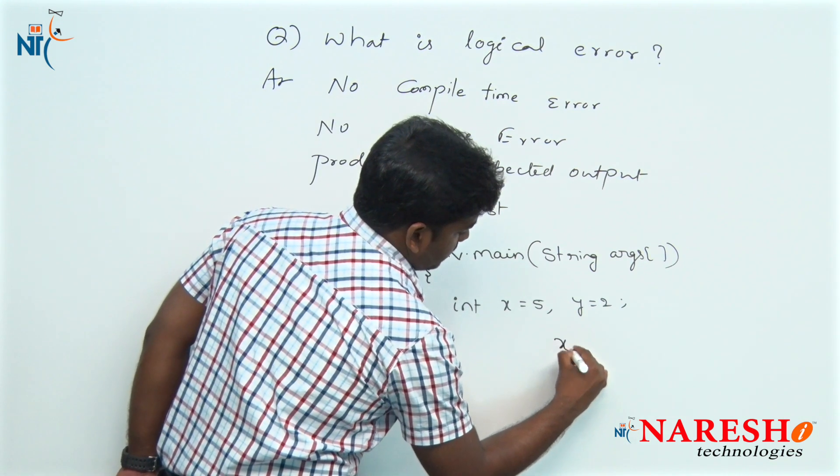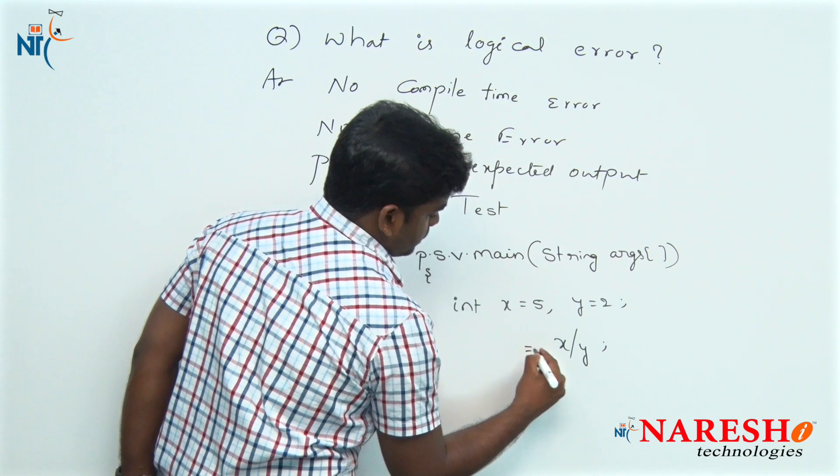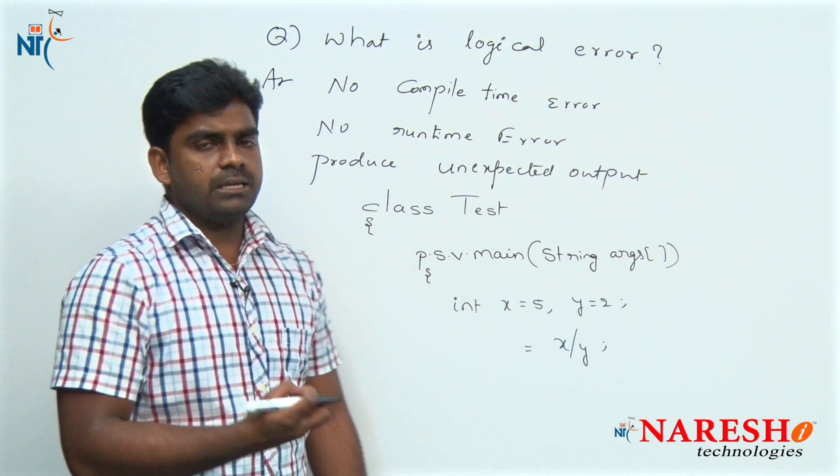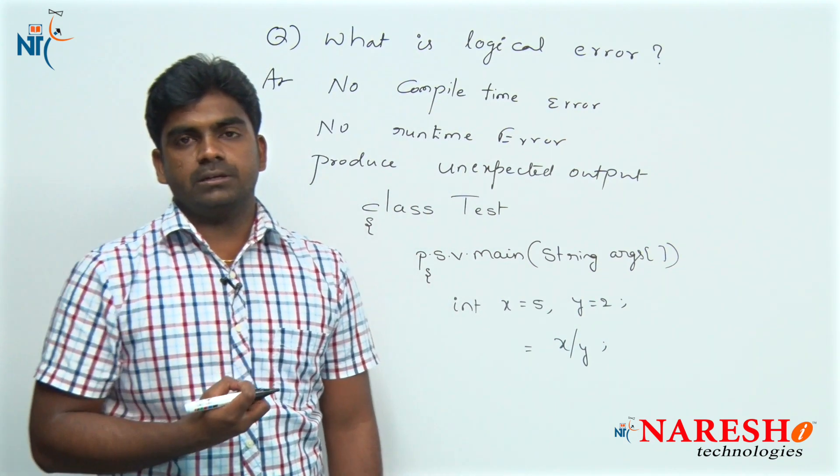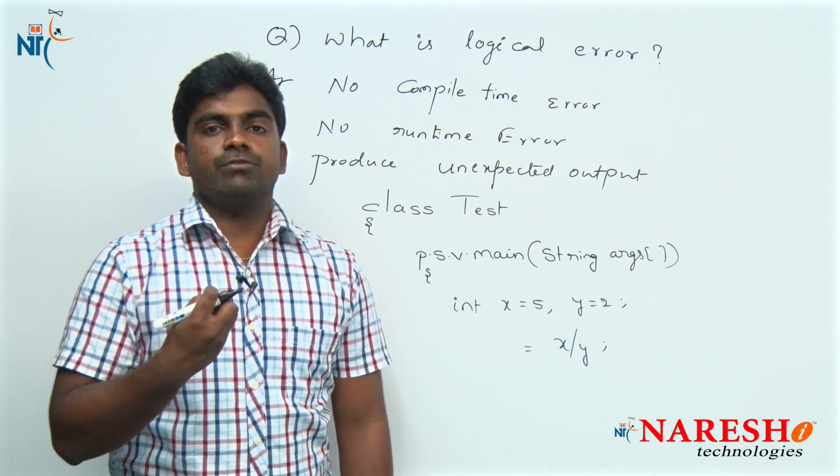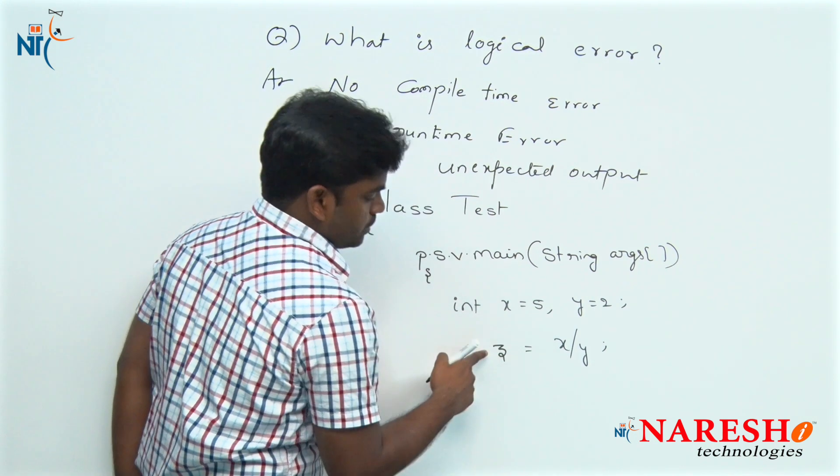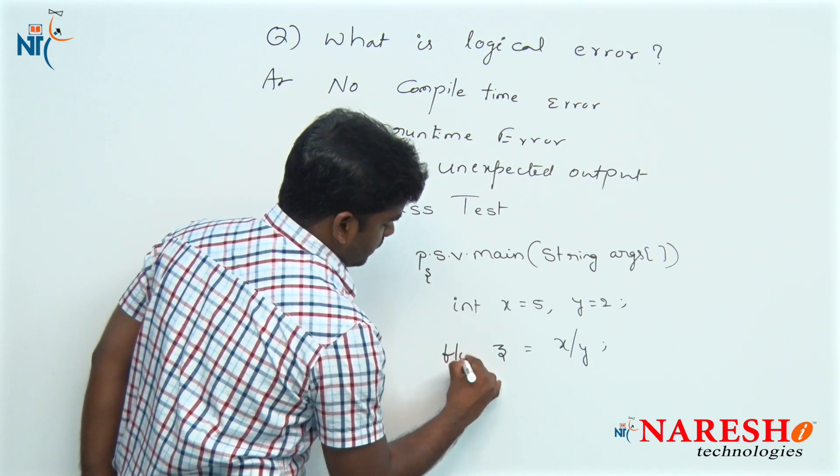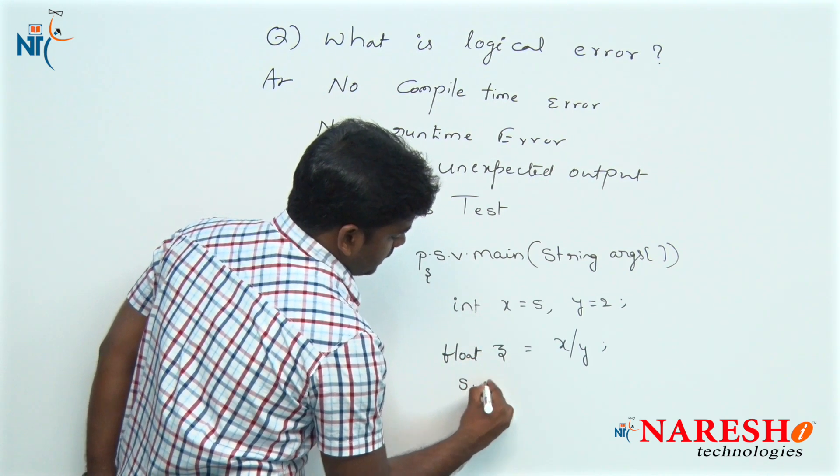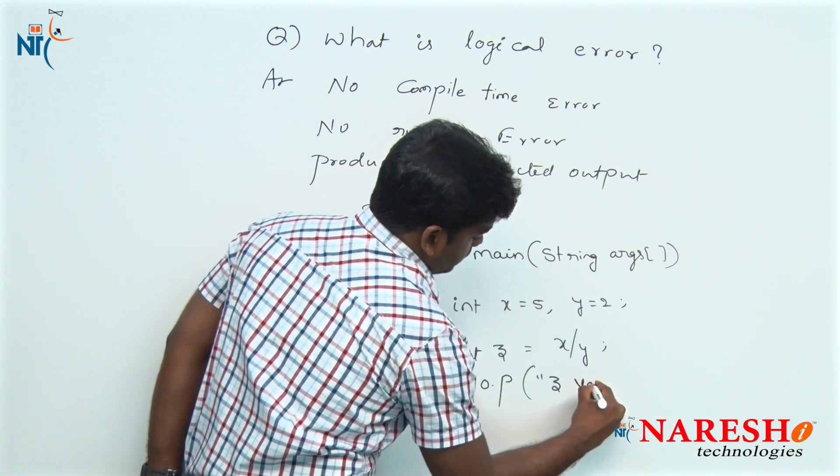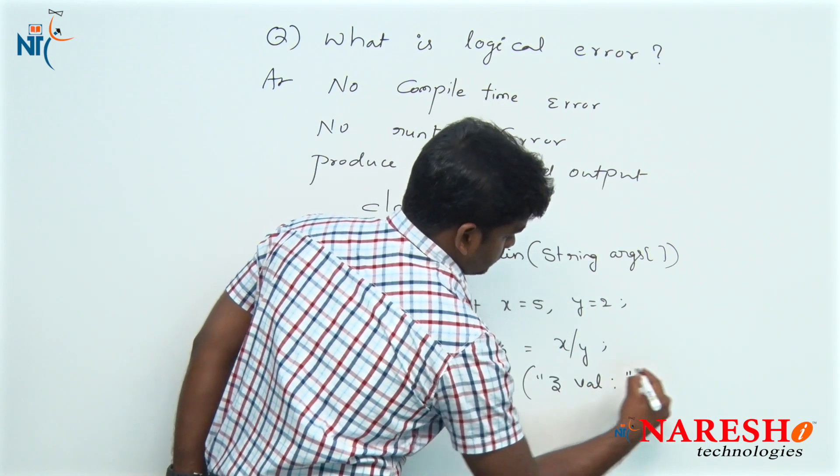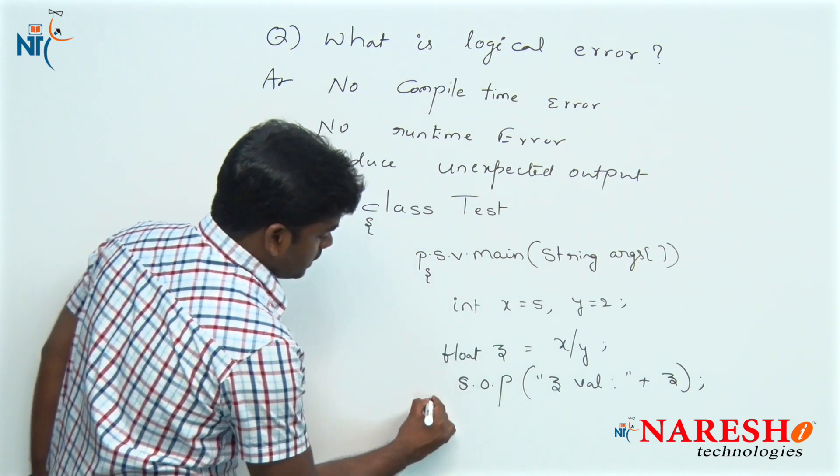Whenever we divide x with y, 5 by 2, what generally we will expect is 2.5, which is a float type. So we are collecting that value into variable z of type float and we are printing that z value. But what will it print?